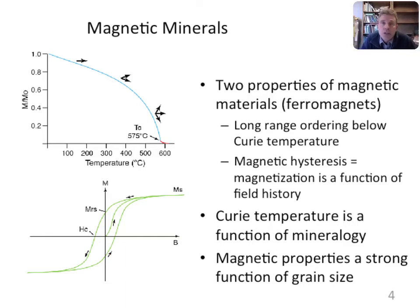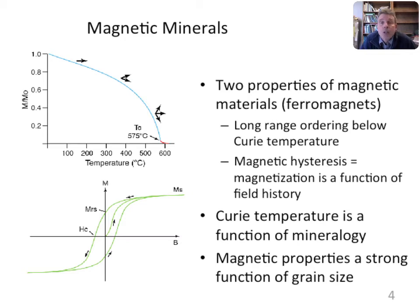For pure magnetite, the Curie temperature is about 575°C. Below that temperature, all the magnetic moments from unpaired electrons are aligned; above it, that long-range ordering disappears. The Curie temperature is a function only of the type of magnetic mineral. The second property is magnetic hysteresis, shown in the bottom figure: materials with permanent magnetization or remanence depend on the history of applied fields.